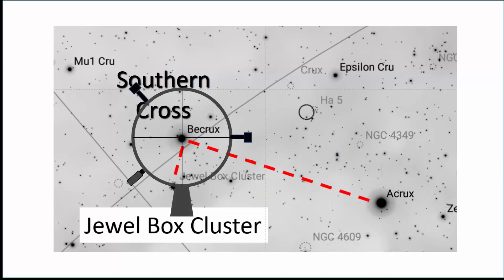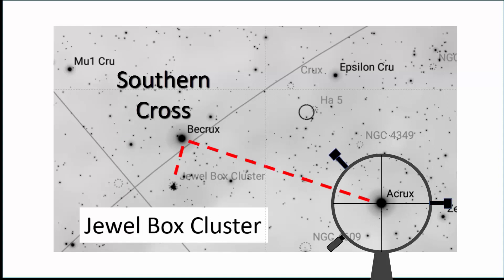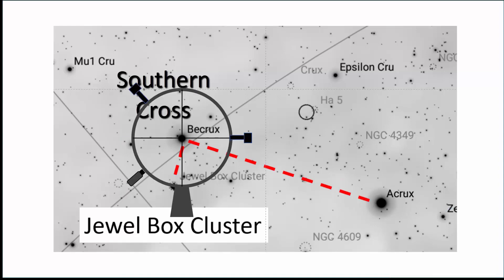Repeat the process, still only using the finder scope, until you can nudge the scope from your last star hop star to the location of your ultimate faint target object. So this is a sequence of hops from star to star to reach your final target.